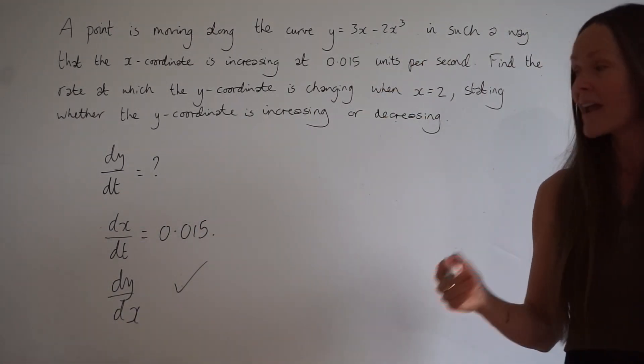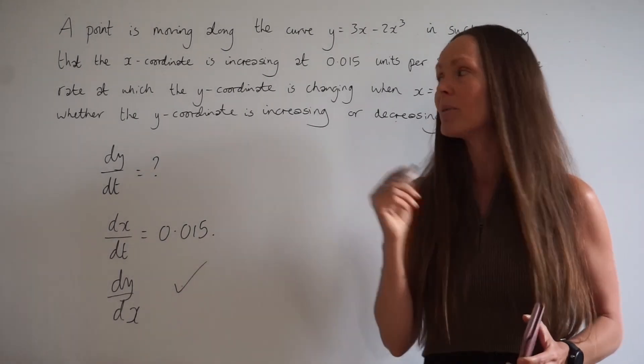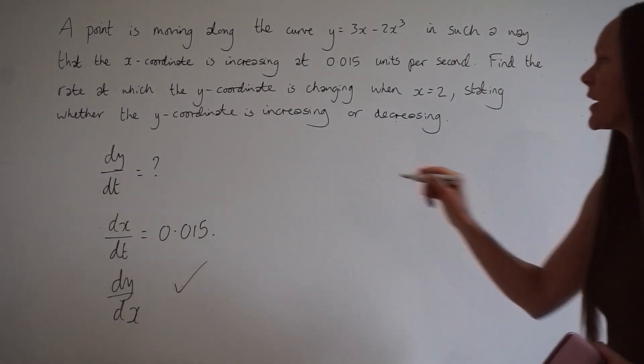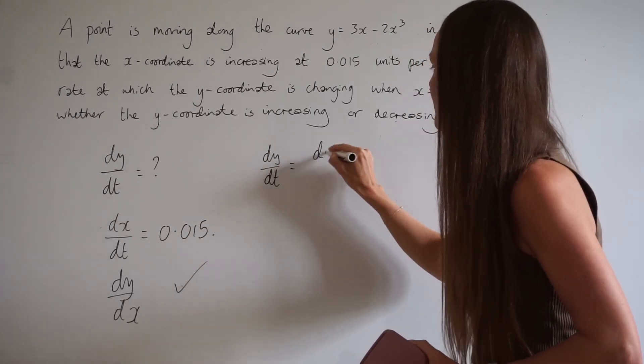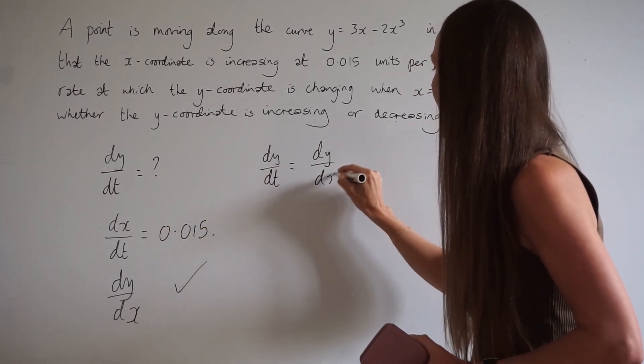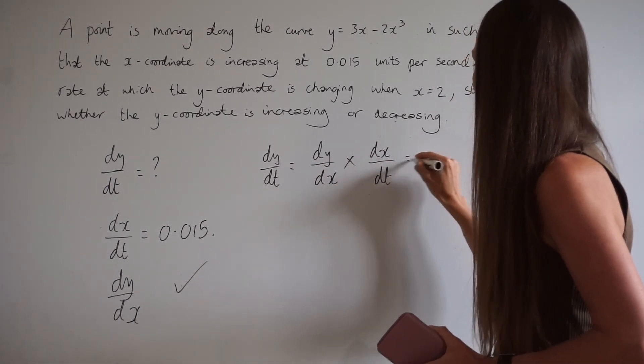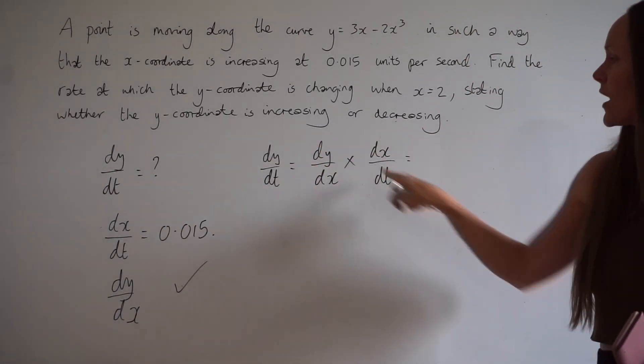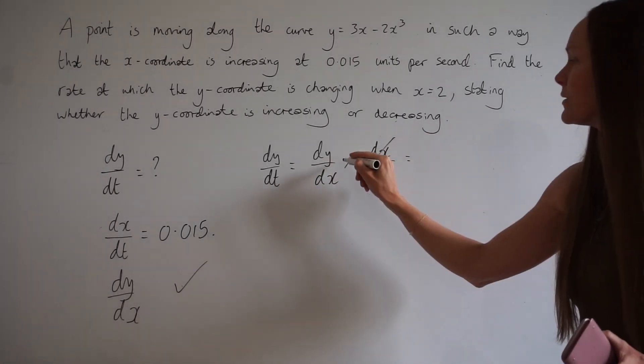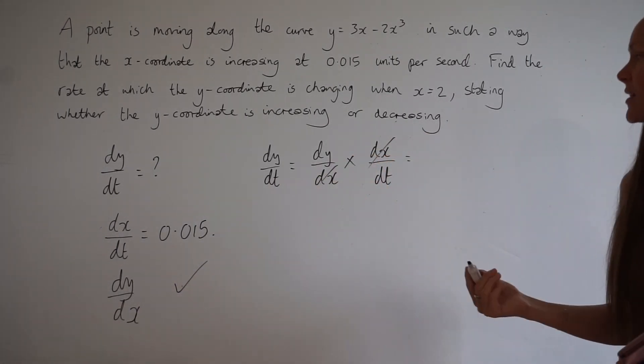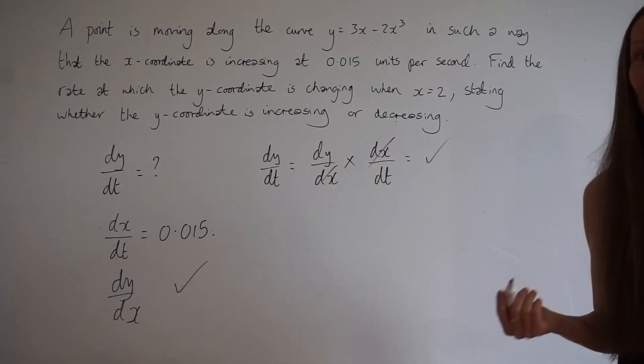Now, you can use dx/dt and dy/dx to calculate dy/dt. To work out dy/dt, if you take dy/dx and multiply it by dx/dt, you should be able to see that when you simplify and multiply these fractions together, dx divided by dx is 1 and they cancel each other out to give you dy/dt, which is what you're trying to calculate.